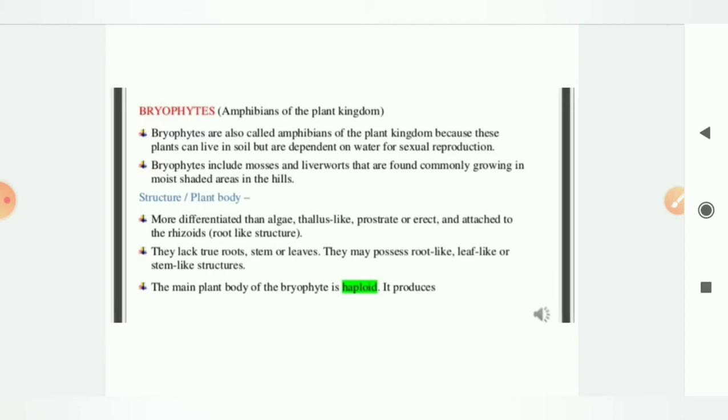If I talk about its structure, unlike algae, the structure of bryophyte is quite complex because now it contains root-like, stem-like, leaf-like structure. The main plant body of the bryophyte is haploid. Haploid means it contains single set of chromosome. For example, in case of human beings there are 46 chromosomes, that is 23 pairs, so we are diploid organism. But in case of bryophytes they don't have double set; they have single set means they have only one set of chromosome.